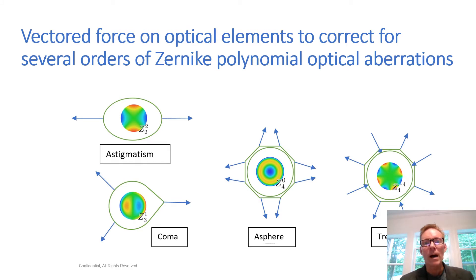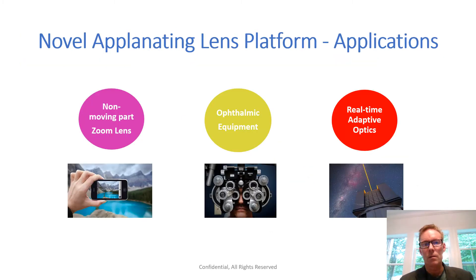The lens is considerably more powerful than just correcting for defocus. With vectored applanation, it can also simultaneously correct for most orders of superimposed Zernike aberrations in real-time. This likely would not be an aspect of the intraocular lens; however, this latitude of optical correction lends itself to multiple applications in the focus of light, including small-zone lenses, adaptive optics, and dozens of ophthalmic applications.